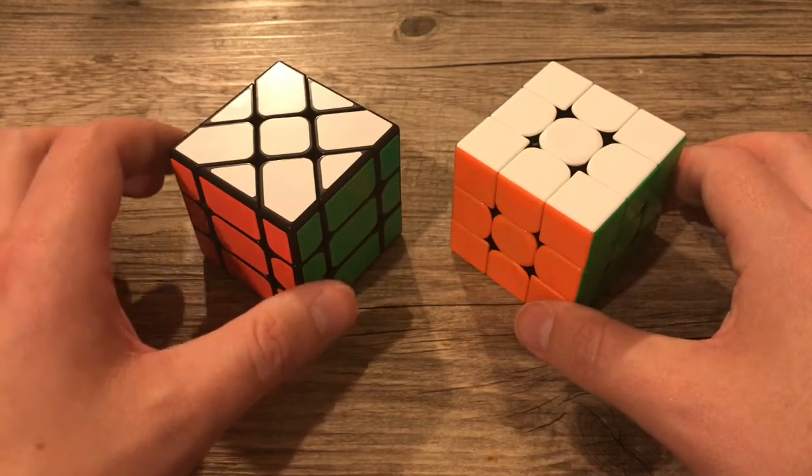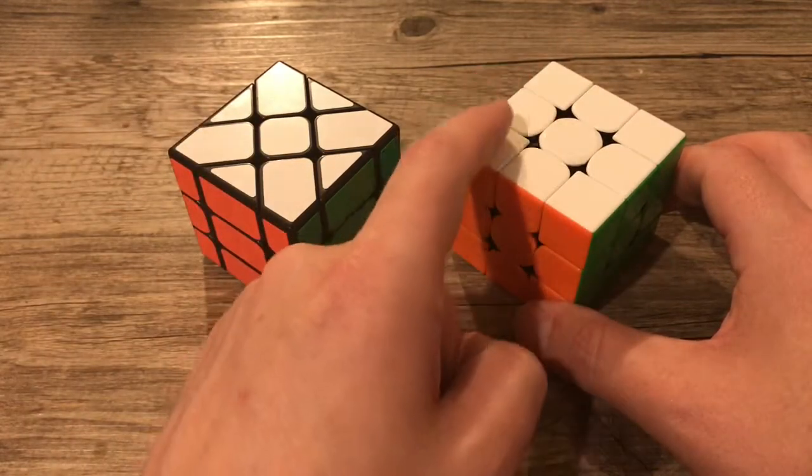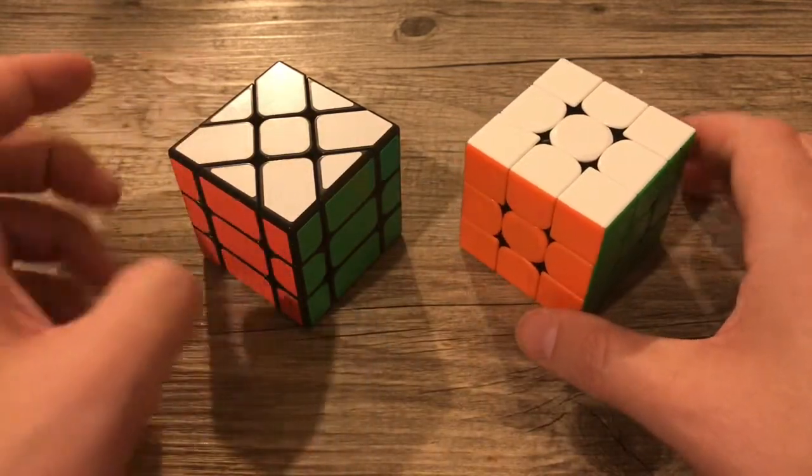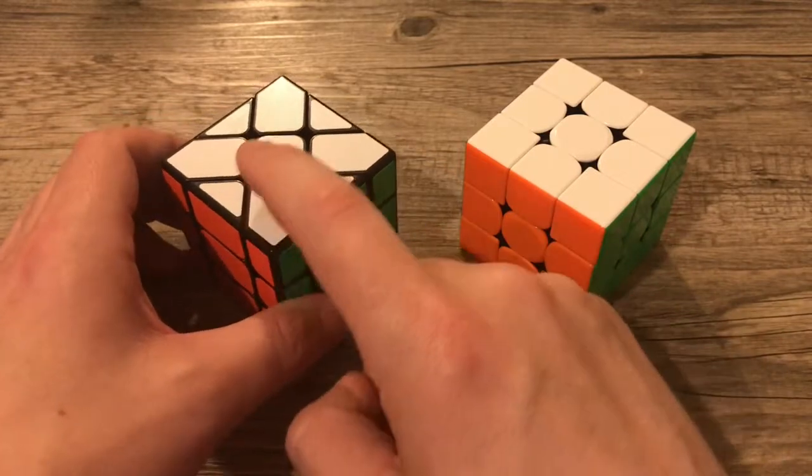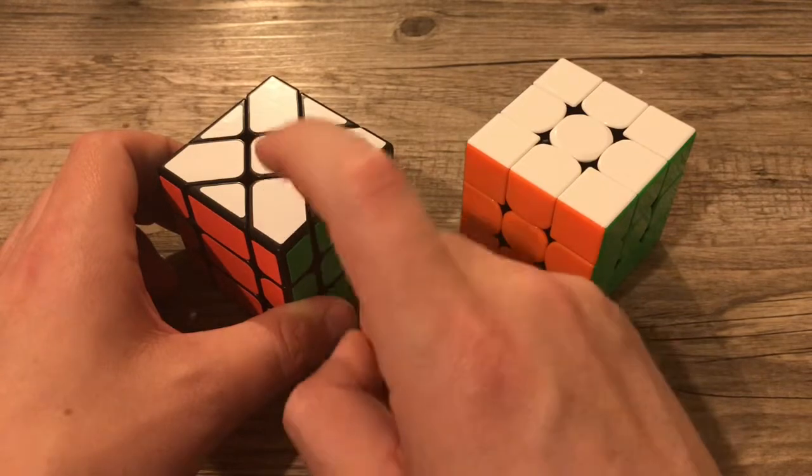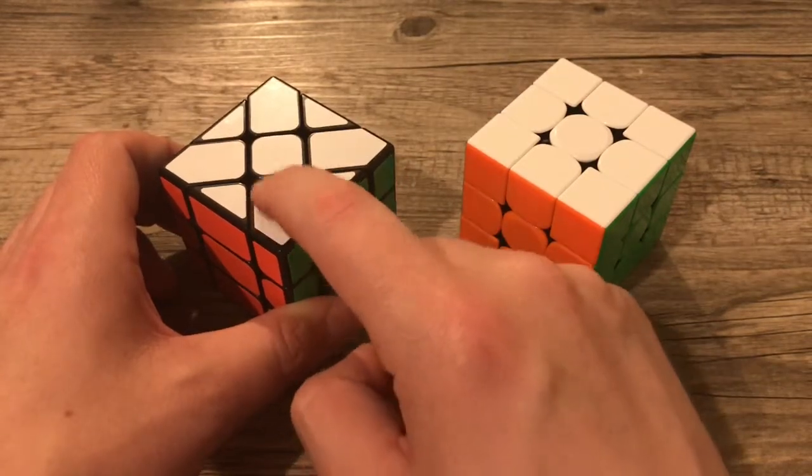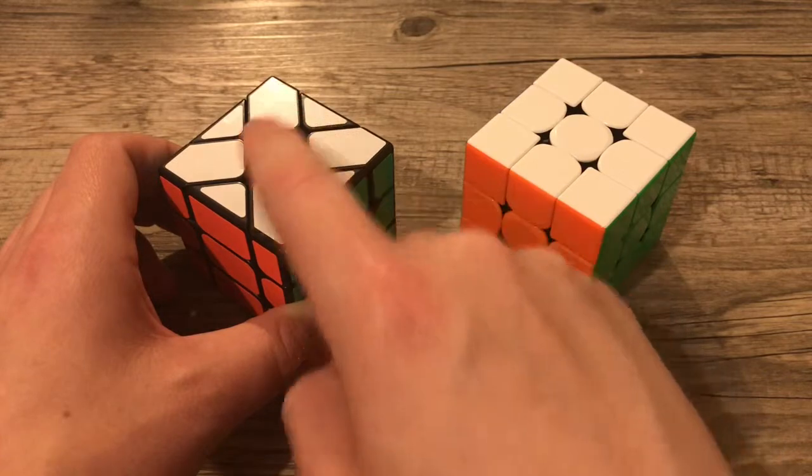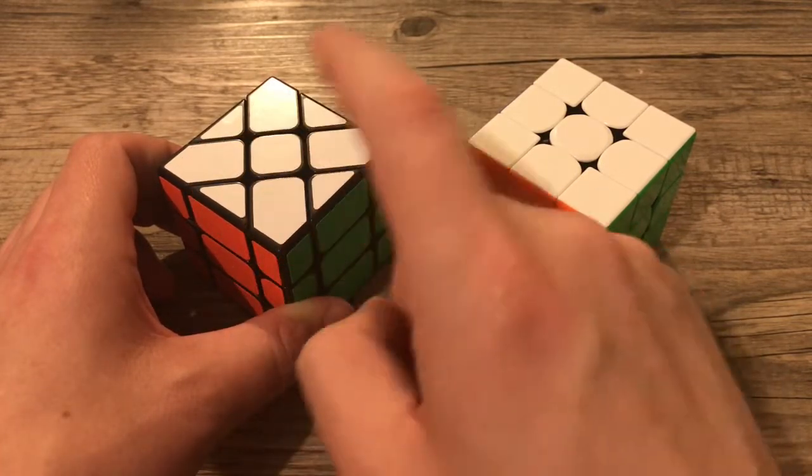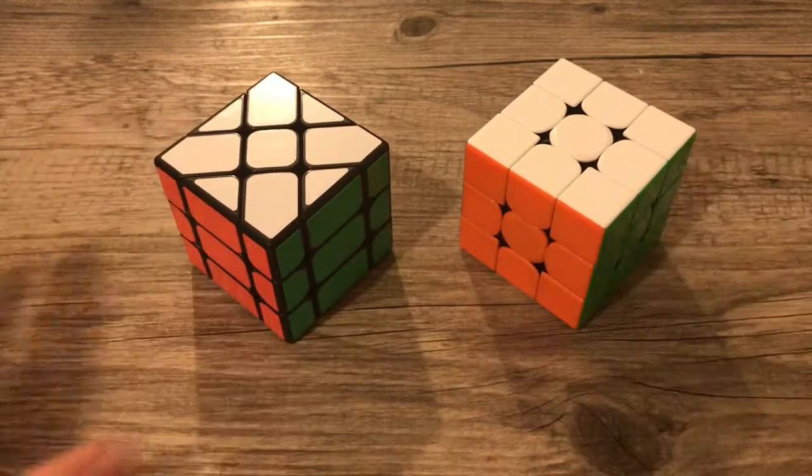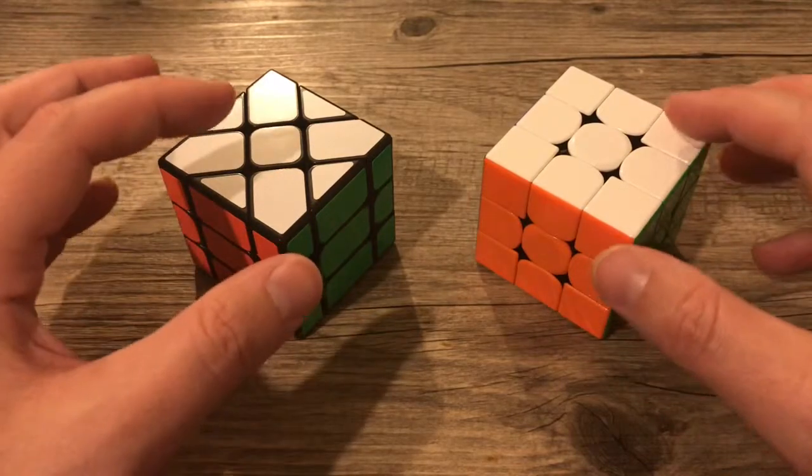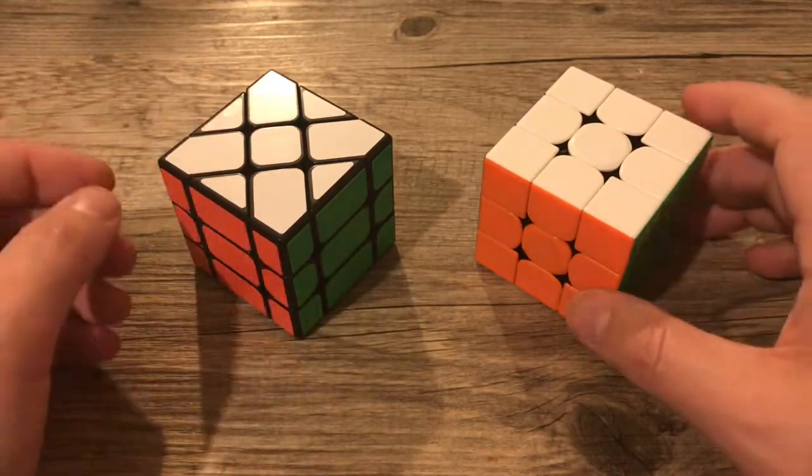Now a lot of times when people do a 3x3 they talk about getting a white cross on top. We're going to do something very similar on the Fischer Cube except we normally would call these the centers, but on a Fischer Cube we're going to be calling these corner pieces the centers. So whenever we talk about centers on a Fischer Cube we're talking about these pieces, and whenever we're talking about corners we're actually talking about these pieces. So when we go to solve a Fischer Cube, we're just going to solve it like a 3x3 with some minor hiccups. Let's get started.